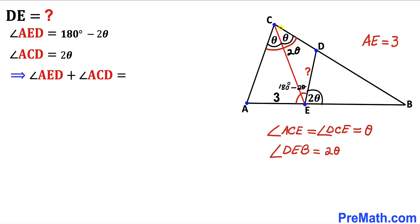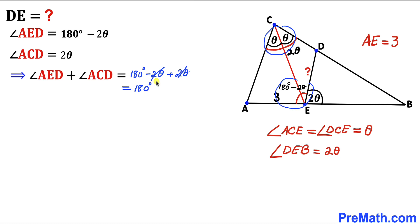Therefore the sum of these two opposite angles — angle AED and angle ACD — is going to be (180 degrees minus 2 theta) plus 2 theta. The negative 2 theta and 2 theta cancel out, so we end up with 180 degrees. The sum of these two opposite angles turns out to be 180 degrees.